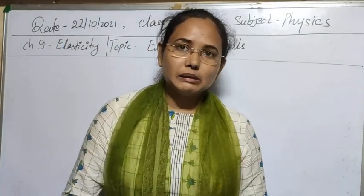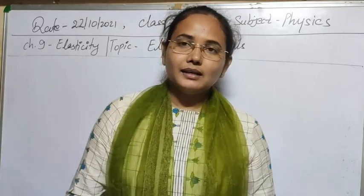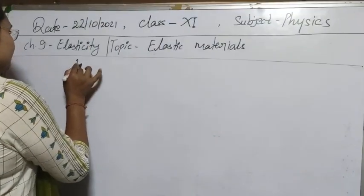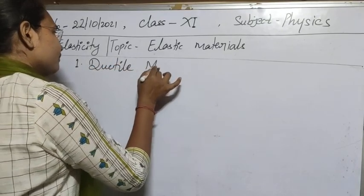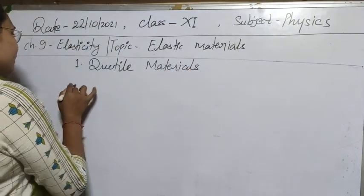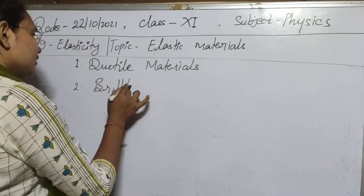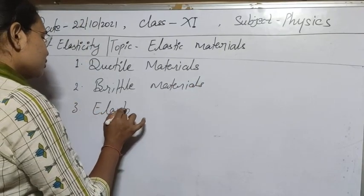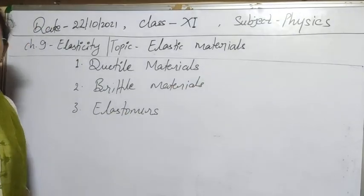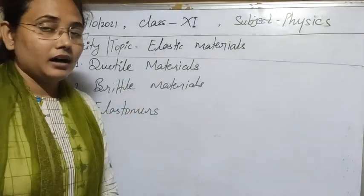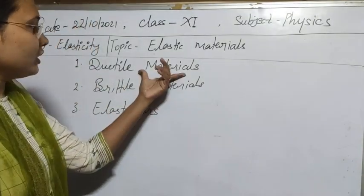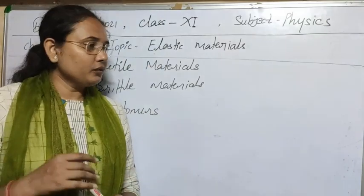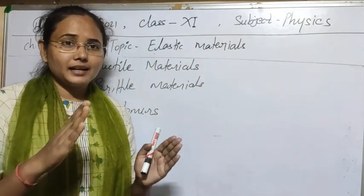The first kind of material we can classify is called a ductile material. The second is a brittle material, and the third is an elastomer. These three materials can be understood using the stress-strain relationship. Ductile materials are those whose plastic range is very large — after the elastic limit, the plastic range from C to D is very wide.